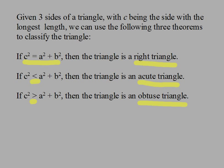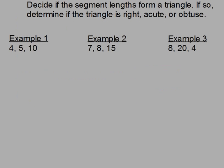Let's look at example one. I've got the two smallest sides here. Four plus five — is that greater than ten? No, that's actually less than ten, and I need it to be greater than ten. So for this, no triangle exists. I can't have a triangle with side lengths of four, five, and ten.